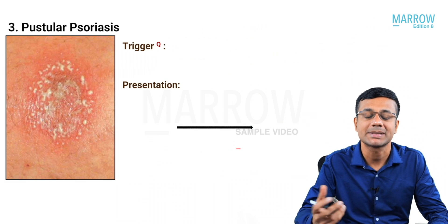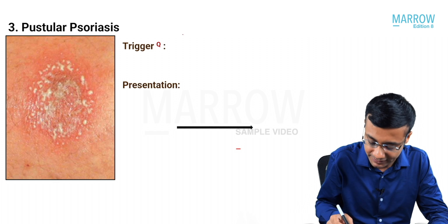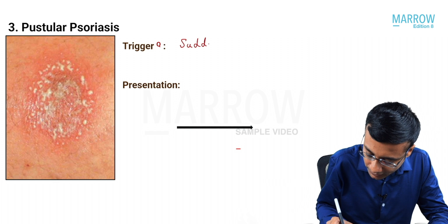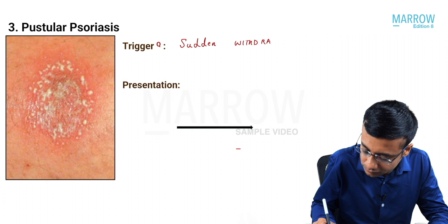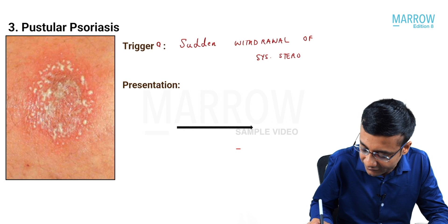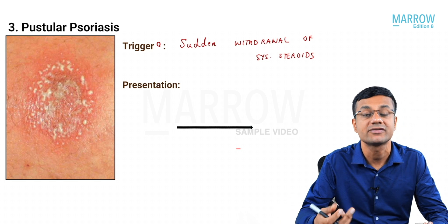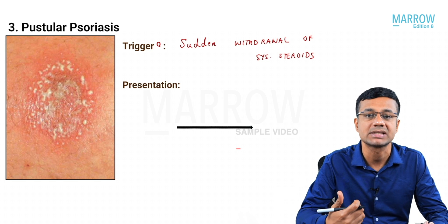Next, we have pustular psoriasis. The most important trigger is sudden withdrawal of systemic steroids. This is why we do not give systemic steroids in psoriasis — if you try to withdraw them, you can develop pustular psoriasis.